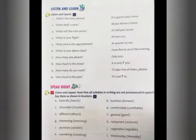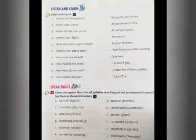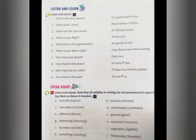Now listen and repeat. Here are some time-related questions and answers. 'What's the time please?' — 'It's quarter past three' — which means 3:15. 'When shall I come?' — 'About 11 o'clock.' 'When will the train arrive?' — 'At half past seven' — which means 7:30. 'When is your flight?' — 'At 2 a.m.' — meaning early morning 2 o'clock. 'What time is the appointment?' — 'At quarter to 10' — which means 9:45.